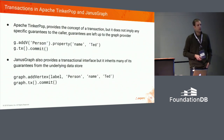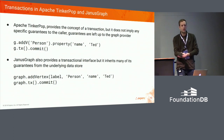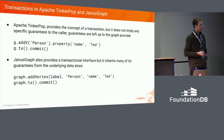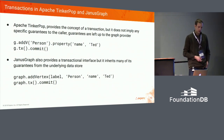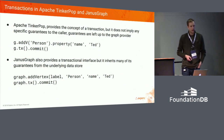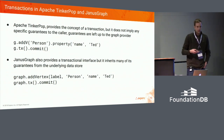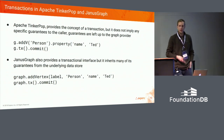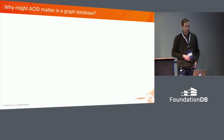Right now, Apache TinkerPop and JanusGraph take a generic high-level approach to transactions. They say, okay, we have this thing called a transaction, but it doesn't actually give you any specific guarantees. Those guarantees are going to be inherited from the backend storage layer. So you can start explicit transactions, do multiple queries, and then commit or rollback. Whether or not you get any ACID consistency depends on the engine underneath.